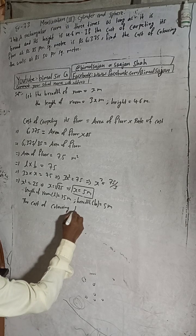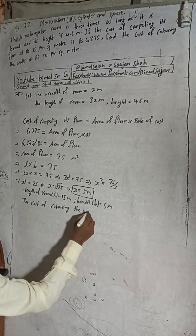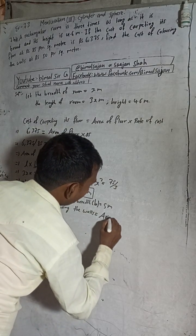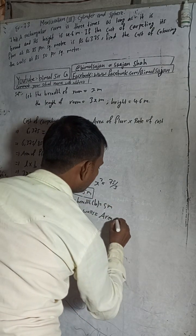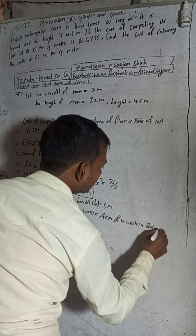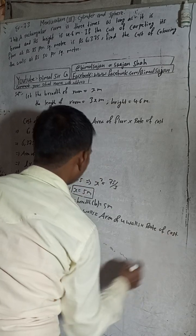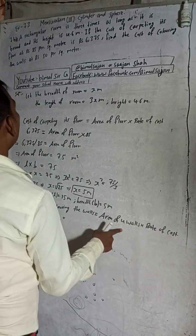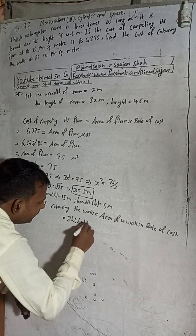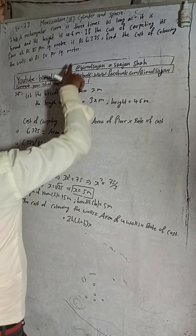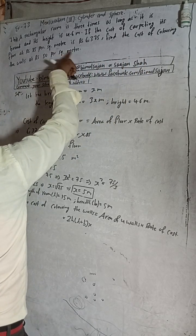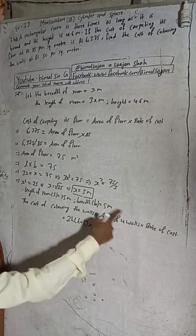The cost of colouring the walls equals the area of four walls multiplied by the rate of cost. Area of four walls is 2H(L + B) multiplied by the rate of cost. The cost of colouring is 50 rupees per square meter.